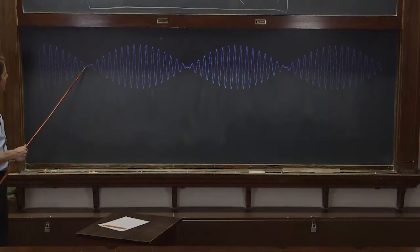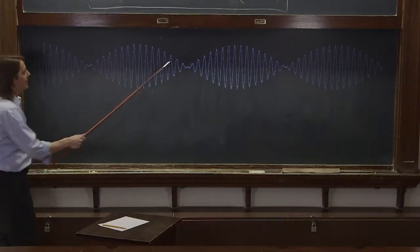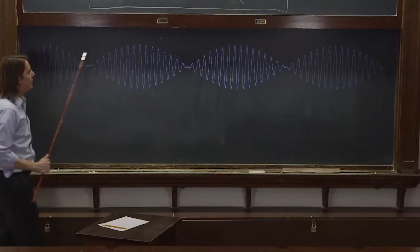So they cancel here, we get nothing. And they add here, we get a big amplitude. Actually, we get twice the amplitude. And then they cancel here, and they add here. So these are called beats.